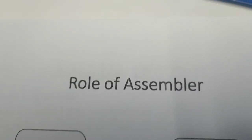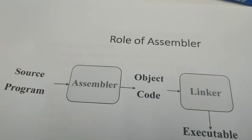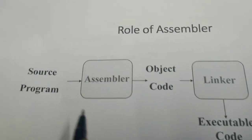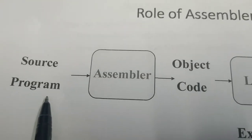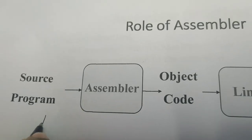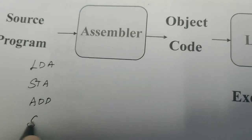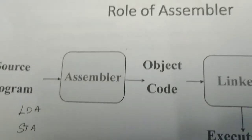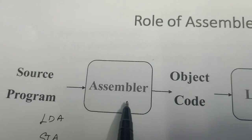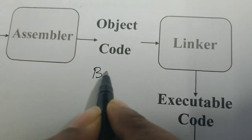Welcome to this video on the role of assembler and its functions. The assembler takes a source program as input. In general, the source program is written in mnemonics — assembly level language instructions like LDA, store accumulator, ADD, SUB, multiplication, division. This source program is given as input to the assembler, which reads it line by line and translates it into object code — object code is in binary form, zeros and ones.